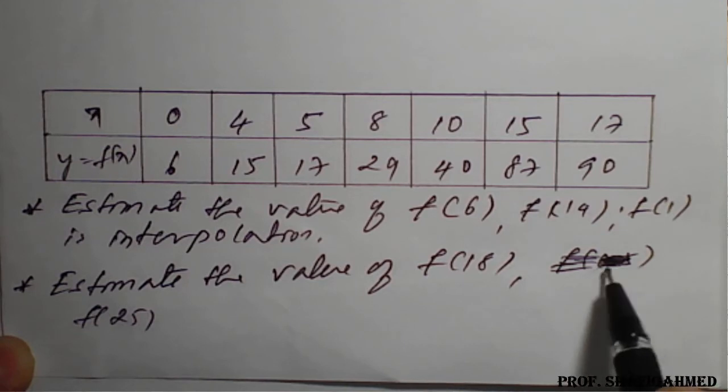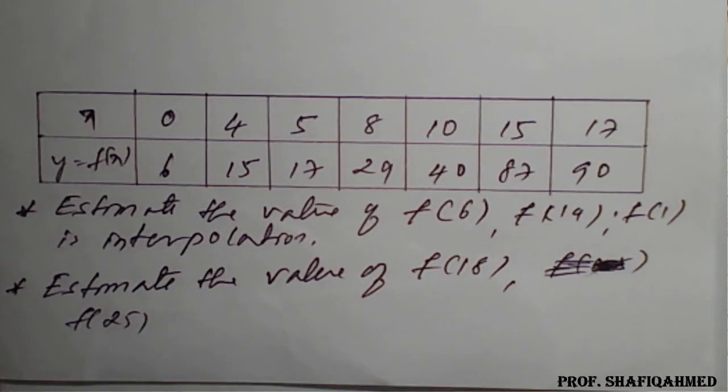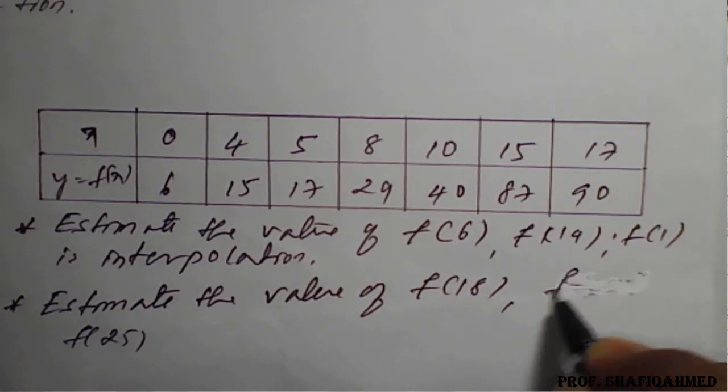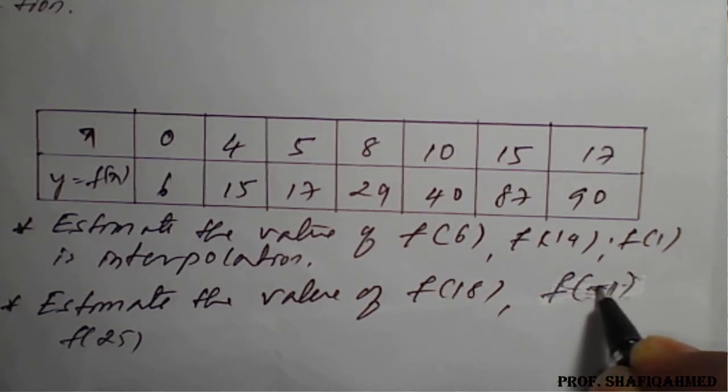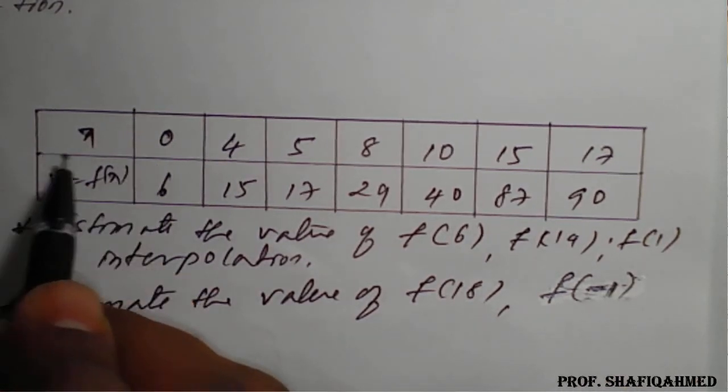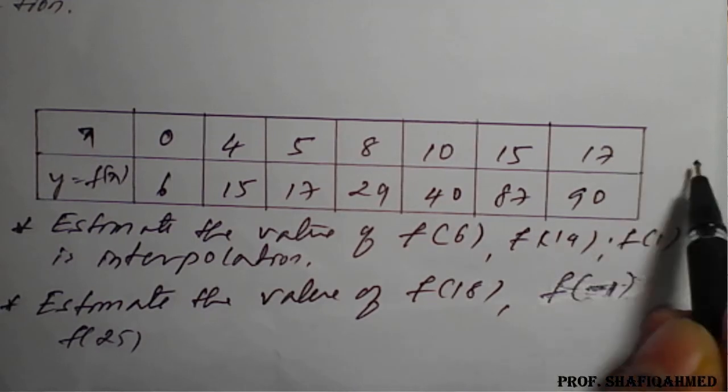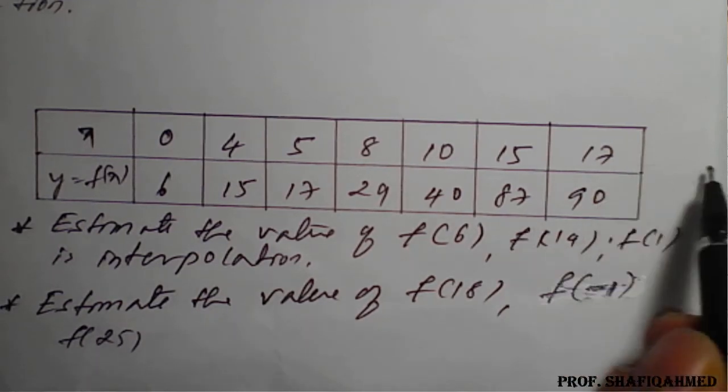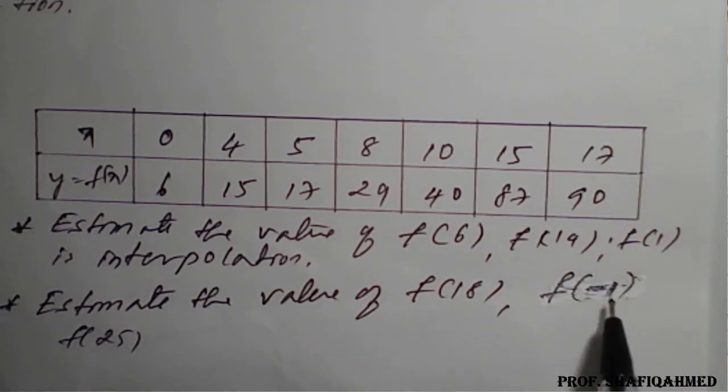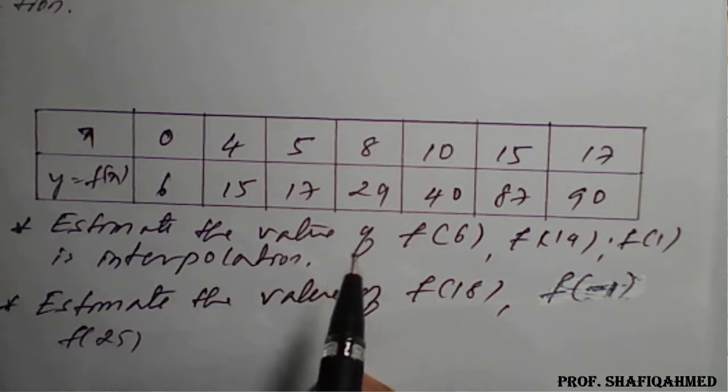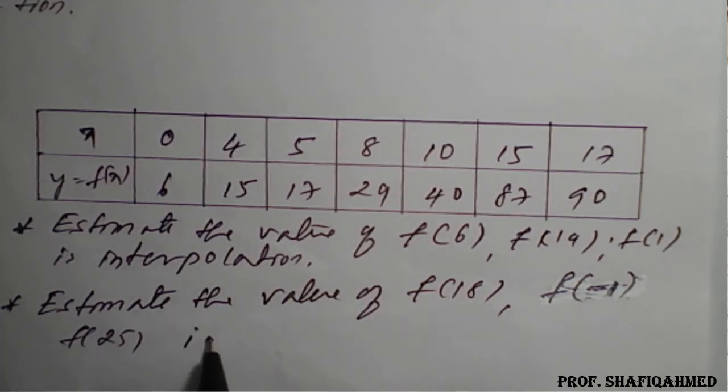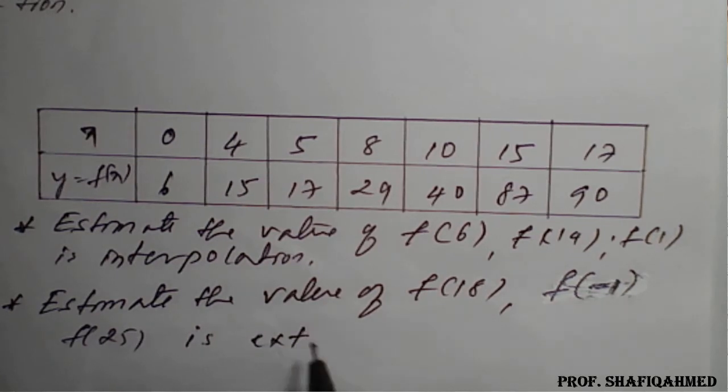I will take it as f of minus 1, a negative value, which is before 0, and 18 is after 17, 25 is also after 17. So, f of 18, f of minus 1, f of 25 is all we will consider as extrapolation.